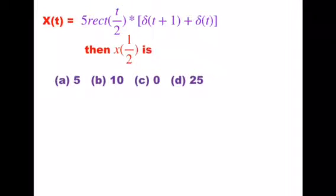Hi to everyone. Here a function x of t is given, that is 5 into rectangle function of t by 2, convolution with two impulse signals — that is δ(t+1) plus δ(t). The question is: what is the value of x at t equal to 1 by 2? The options are: a is equal to 5, b is equal to n, c is equal to 0, d is equal to 5.